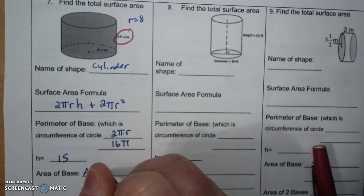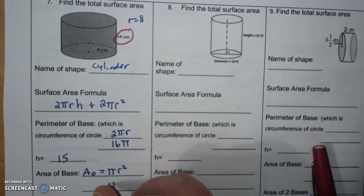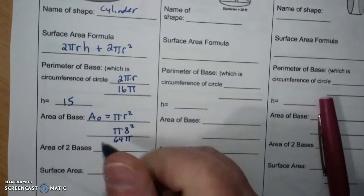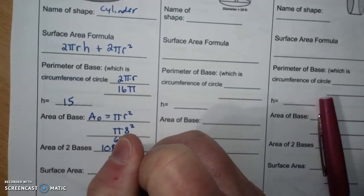Area of a circle is πr squared which is π times 8 squared which is 64π. Two of them is 108π.